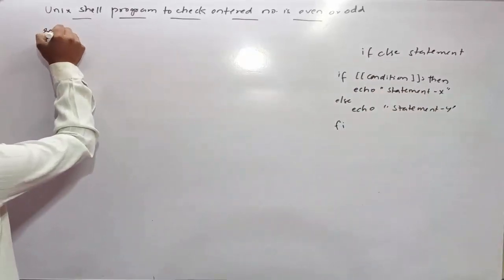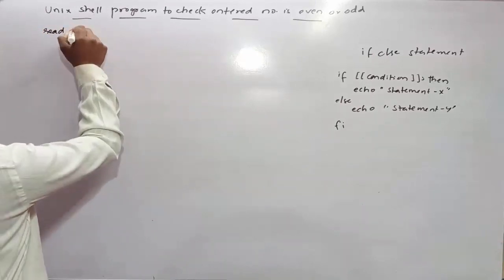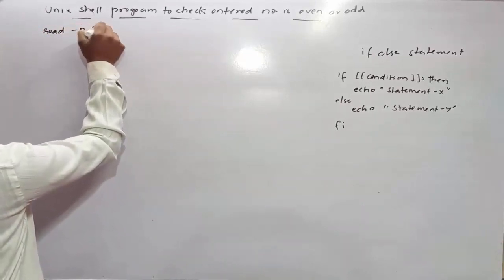I will use the read command to accept the input: read hyphen p space double quote 'enter the number', then I will create a variable num.